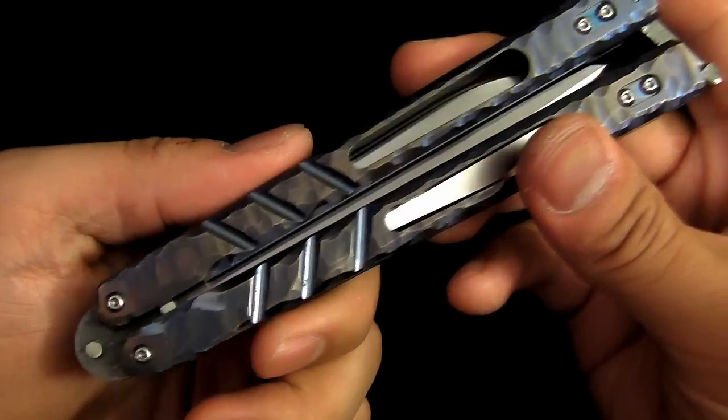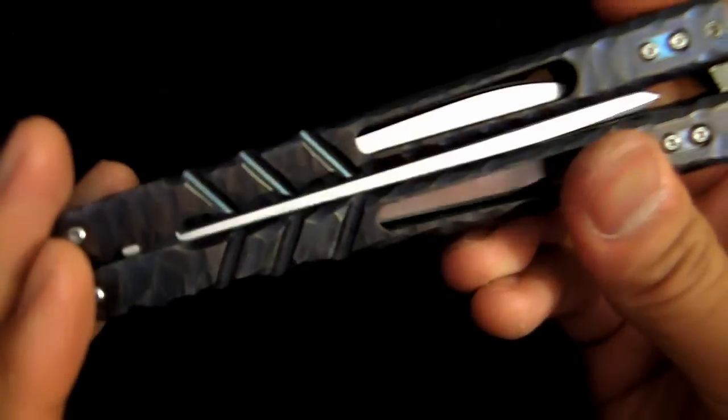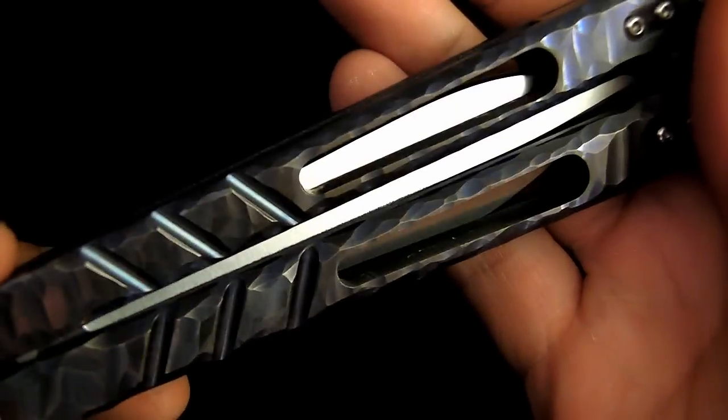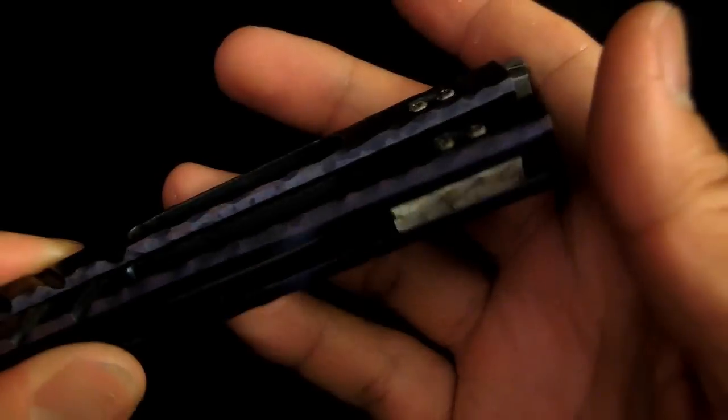Chuck went ahead and anodized it and it really came out cool because of the way the texturing of the handle is. Some parts of it are purple, some parts of it came out kind of light blue, as you can see. And just depending on the way the light hits it, it looks like it's almost glimmering. So it's very cool.